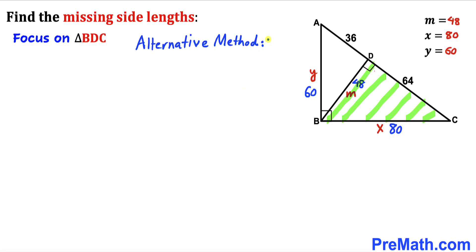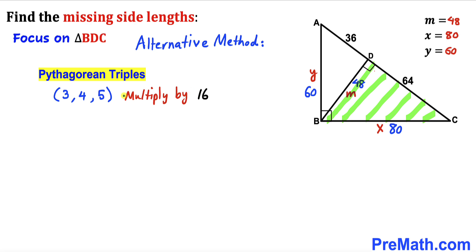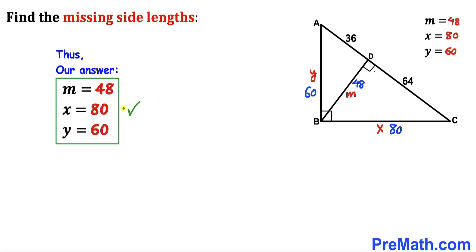As an alternative method, recall the Pythagorean triplet 3, 4, 5. Multiplying by 16: 3×16 = 48, 4×16 = 64, 5×16 = 80. So the triplet is 48, 64, and 80, confirming BC = 80. Our final answers for the missing side lengths are BD = 48, AB = 60, and BC = 80. Thanks for watching — please subscribe for more videos!